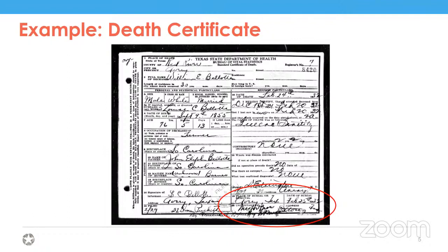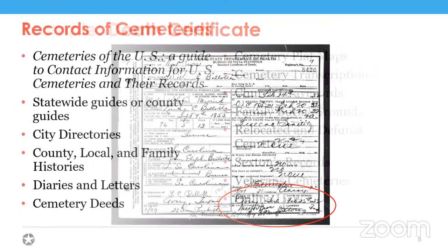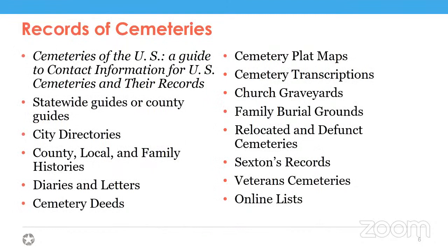If you're lucky enough to find documents or records that give you a cemetery right off the bat, that's great. However, that's not going to happen with all of your ancestors. You may have to explore all of the cemeteries in the county or area where your ancestor died to figure out where they are buried.